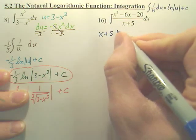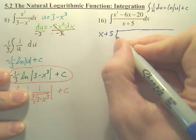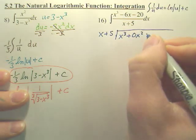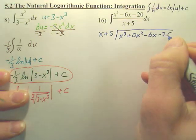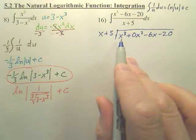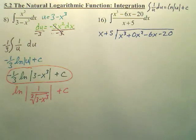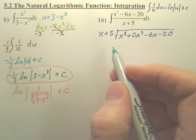So x plus 5, and you're going to divide x cubed plus 0x squared minus 6x minus 20. Now remember, you have to have one for every term, so I need to put a 0 for the x squared because I still need that piece. So how do we do long division again?